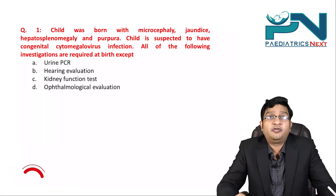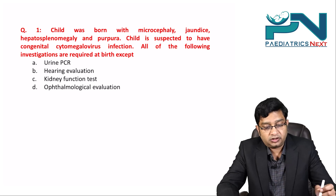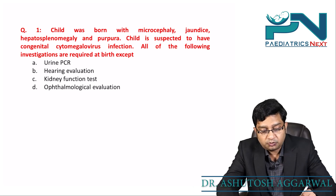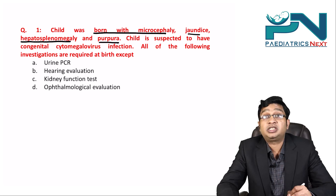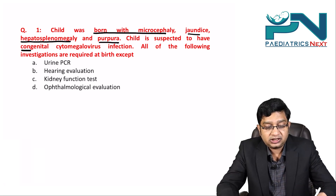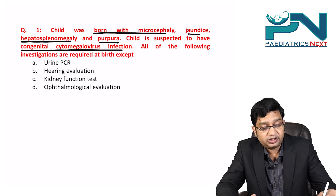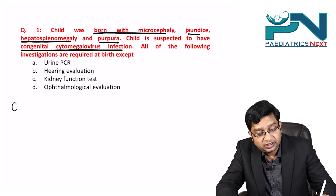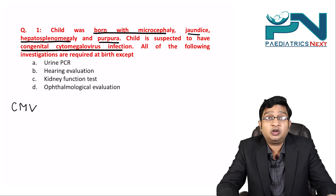Welcome to the discussion of MCQs on intrauterine infections. The first question describes a child born with microcephaly, jaundice, hepatosplenomegaly, and purpura, suspected to have congenital cytomegalovirus infection. The question asks which investigation is NOT required at birth.